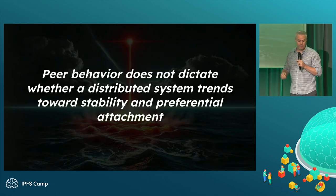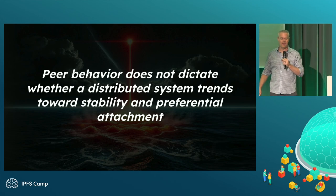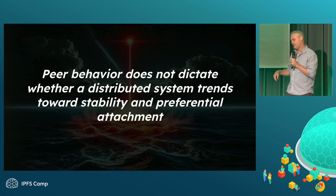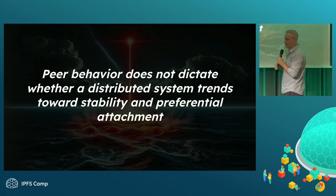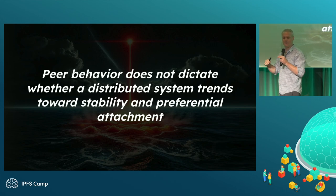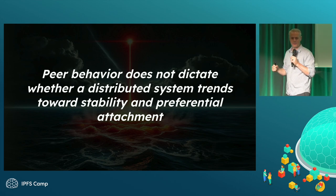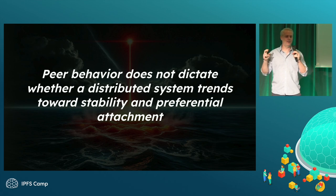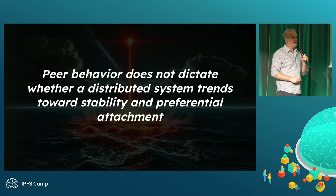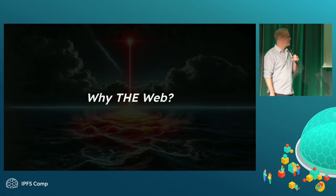It turns out though that peer behavior isn't the dominant thing that determines whether a distributed system constantly fights entropy or trends toward a stable state with preferential attachment — meaning it becomes the network. It's not peer behavior. It's actually link behavior. And I'm going to show you how.